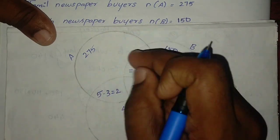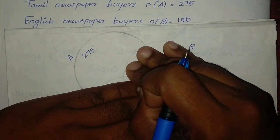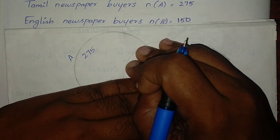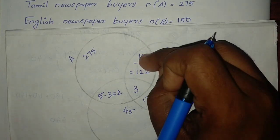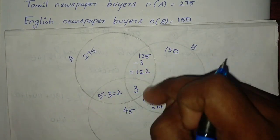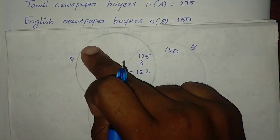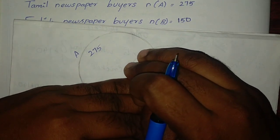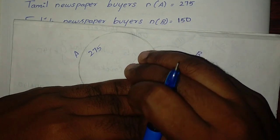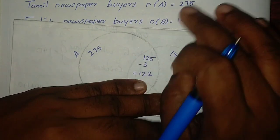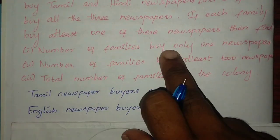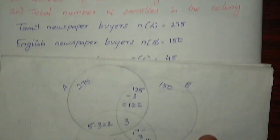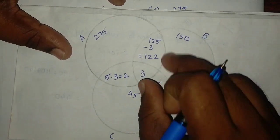Now, only A — only the Tamil newspaper region. If the total is 275, we subtract the overlapping parts. The question asks: find the number of families that buy only one newspaper.